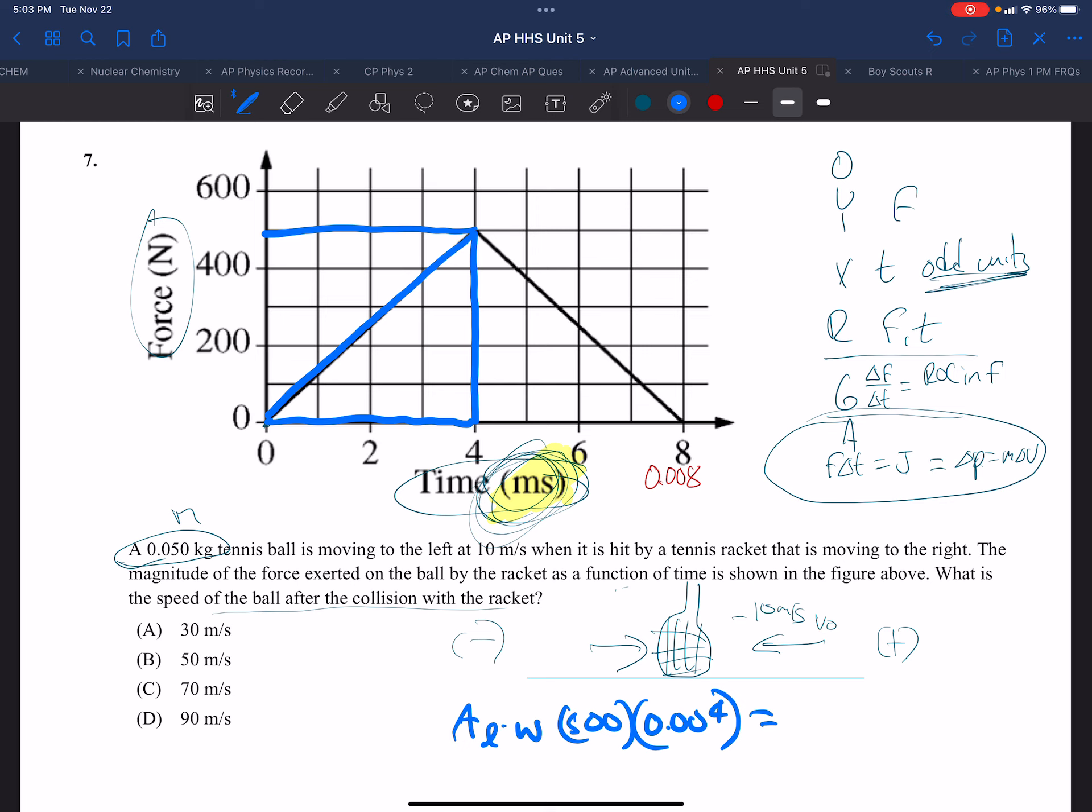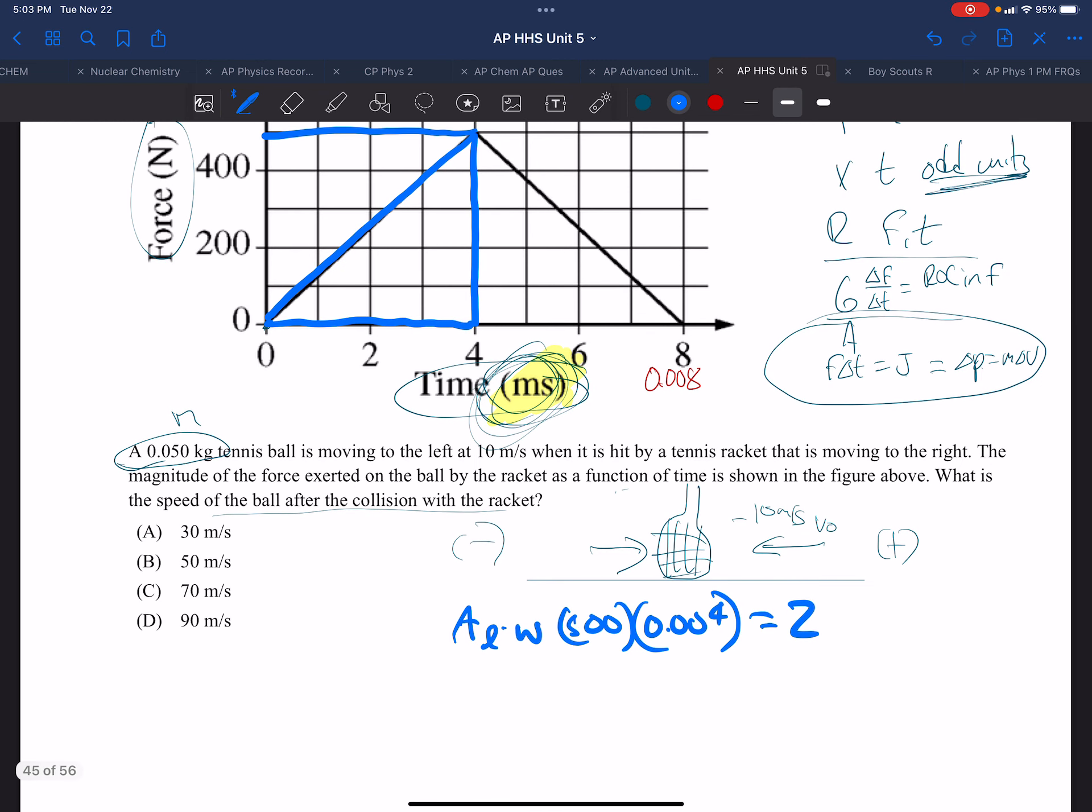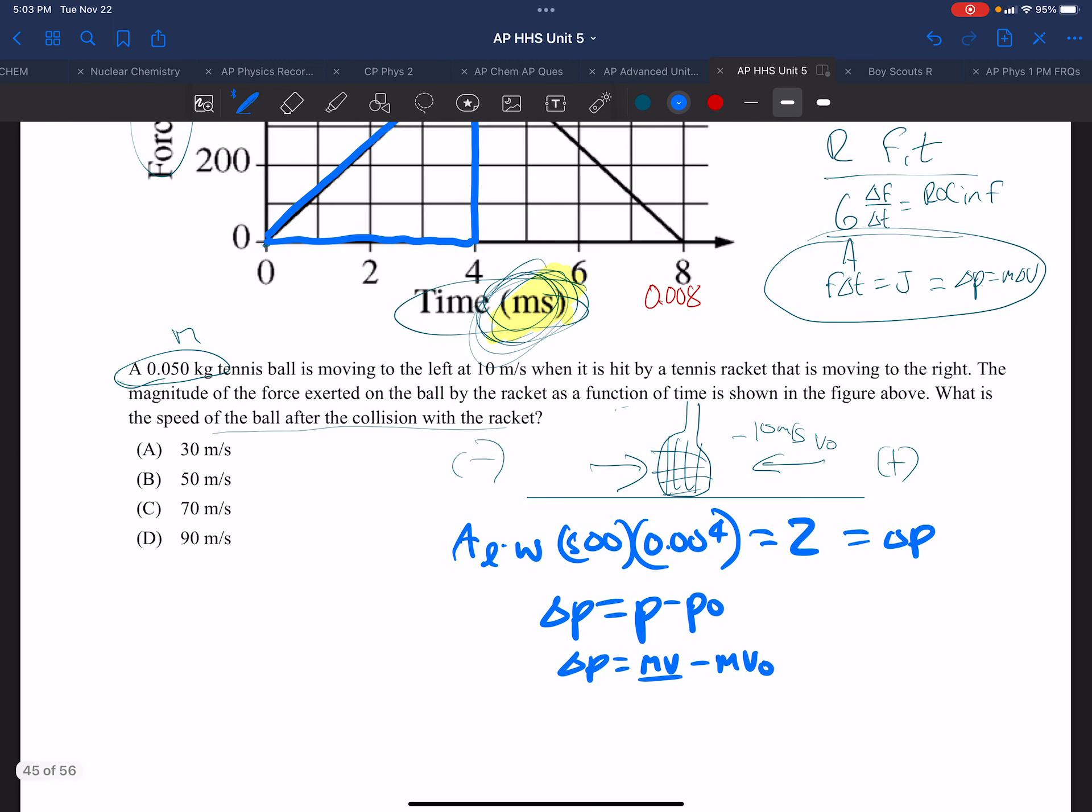So that's going to be our change in momentum, and delta change in momentum is P minus P0. And we want to know the speed afterward, and we could know that if we know the momentum afterward, and the initial momentum is MV0. So we have, we can factor out a mass, and we've got V minus V0, and the V0 is minus 10.